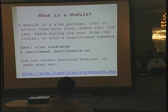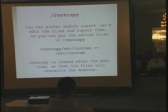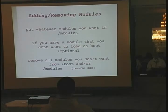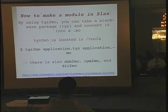What is a module? If you want to boot an optional module, there's a command for that, and the 'livekitmod' command to boot it after you've already got the system running. Root copy is an important folder because you don't have to make modules of files you want to put in there — you just put your directory structure into root copy. So root copy /etc/inittab is /etc/inittab when it boots up. It's loaded after all the modules. To make a module, it's really easy: take a Slackware package (.tgz) and use tgz2mo to convert it to a module. Download something, make it into a module, dump it in the modules folder, compile the CD, and it's ready to go. There's also deb2mo, rpm2mo, and dir2mo.